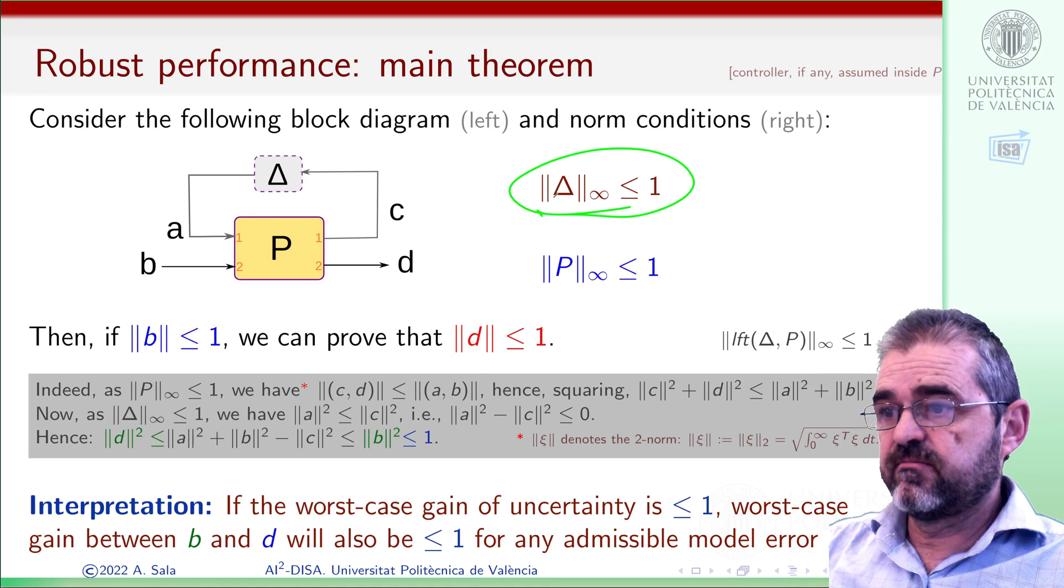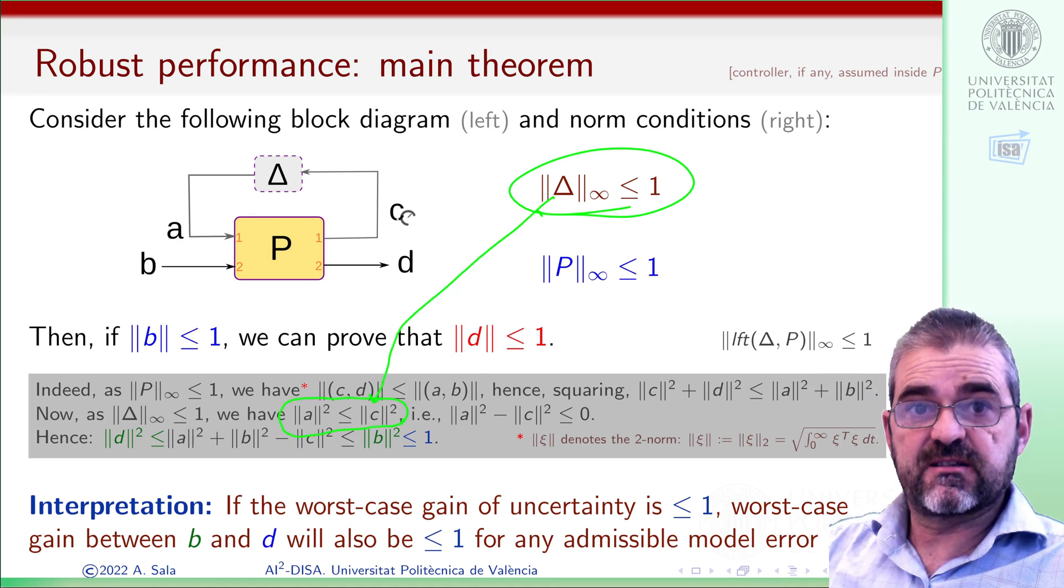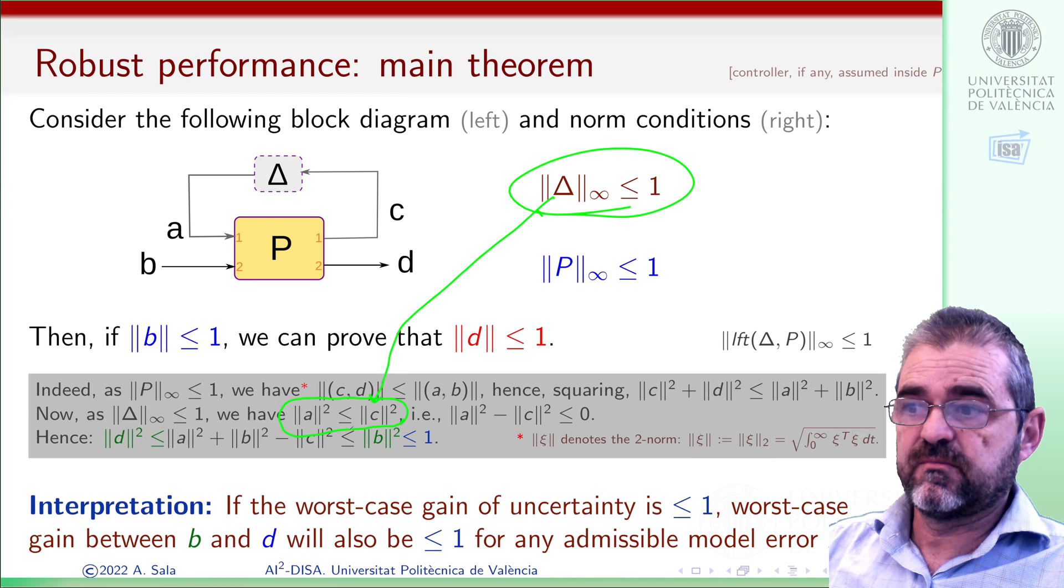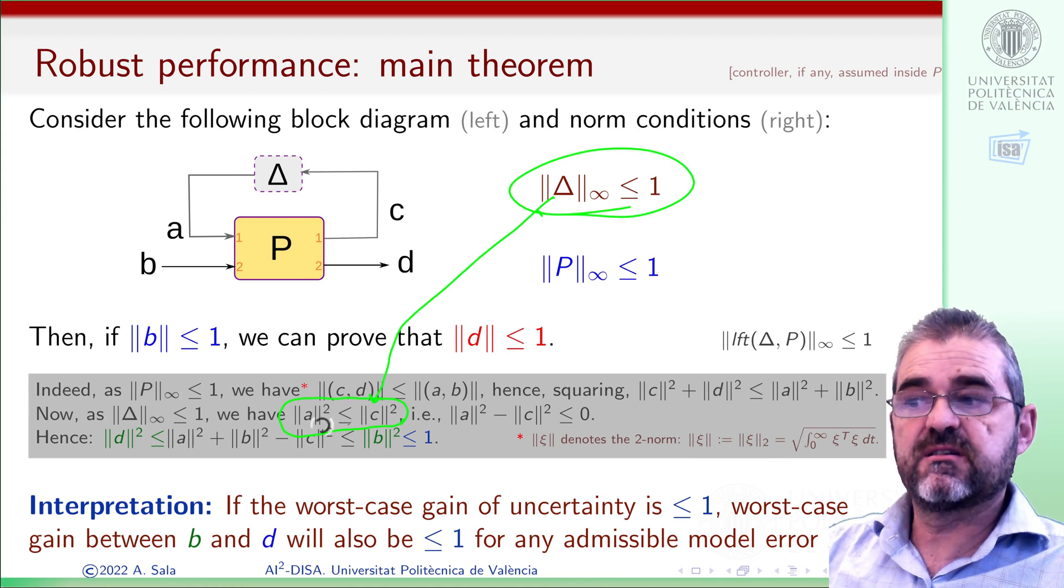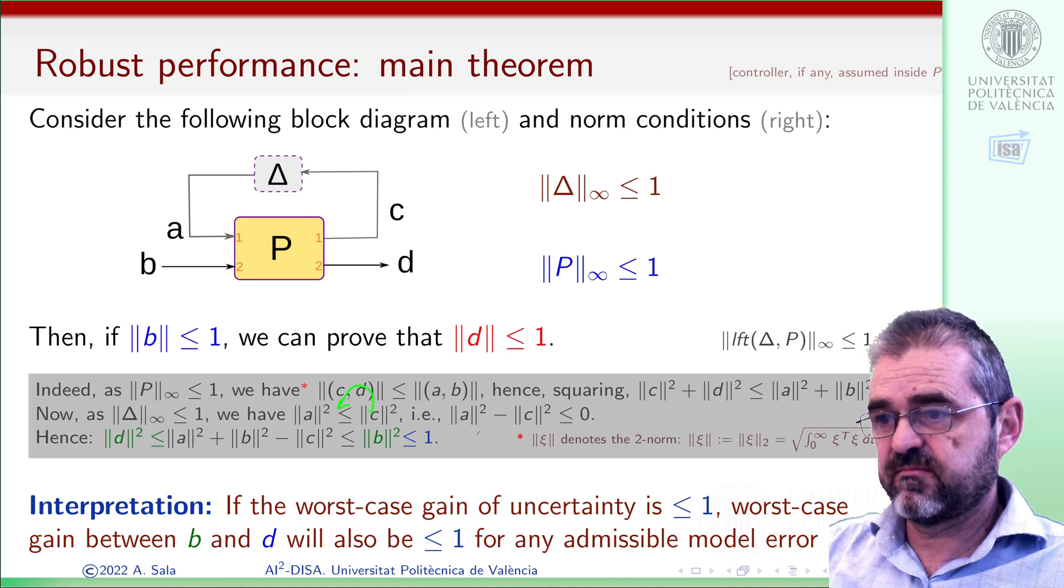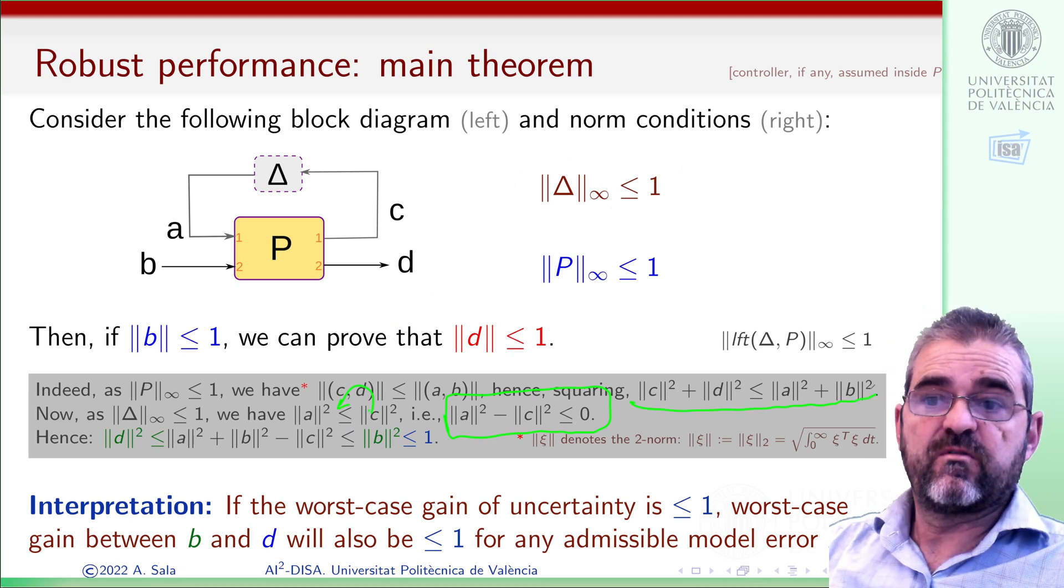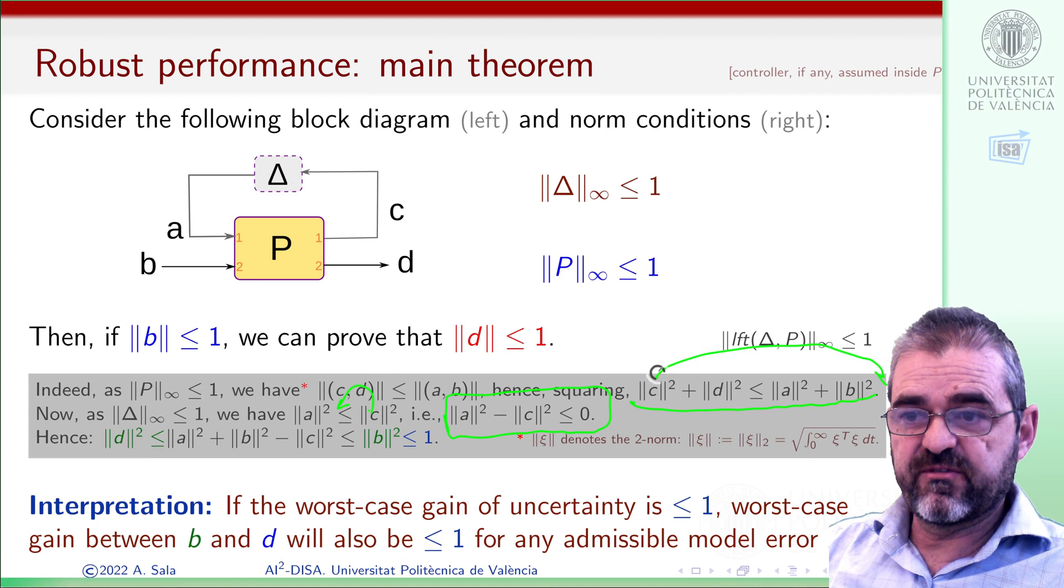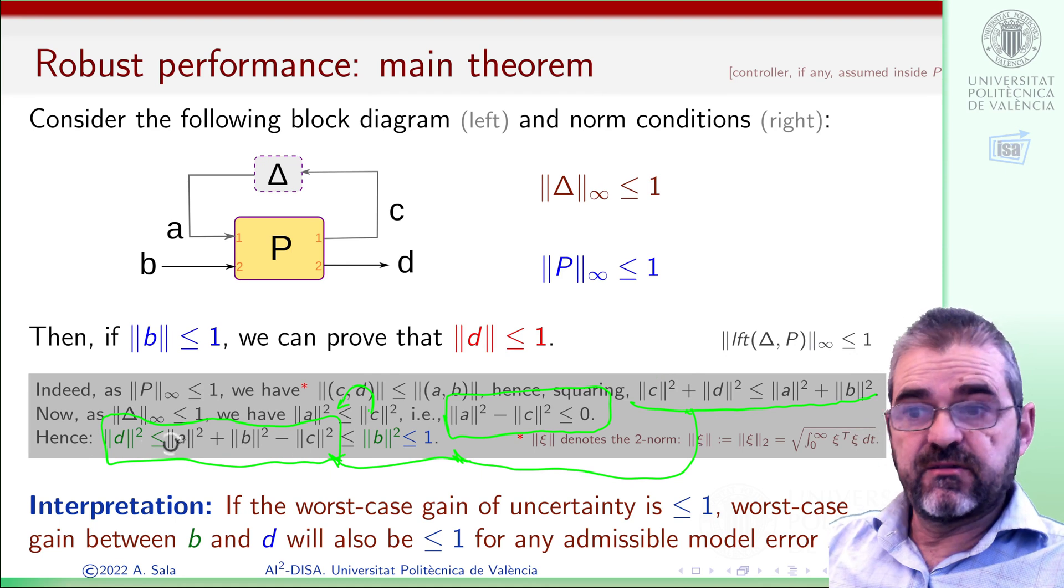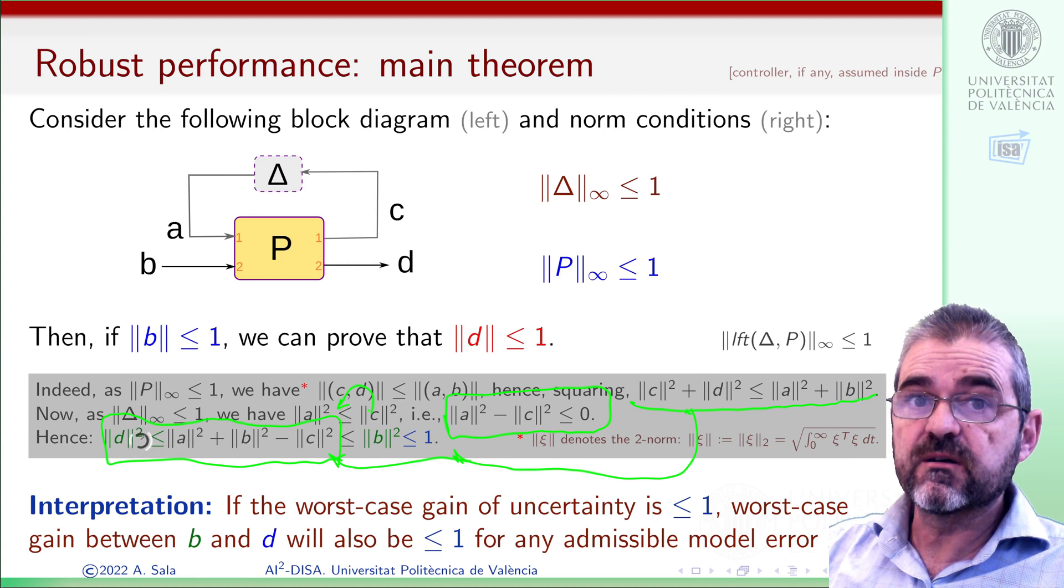Then, this condition also means that the norm of A is smaller than the norm of C, the Euclidean norm. And of course, we can square that and have this inequality. Now, if we move C to the left-hand side, we have this expression. And from this one here, if we move C to the right-hand side, we can write this expression, which is a bound for the size of D, exactly what we are looking for.